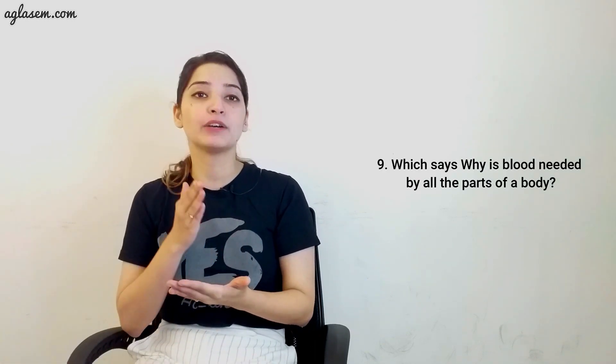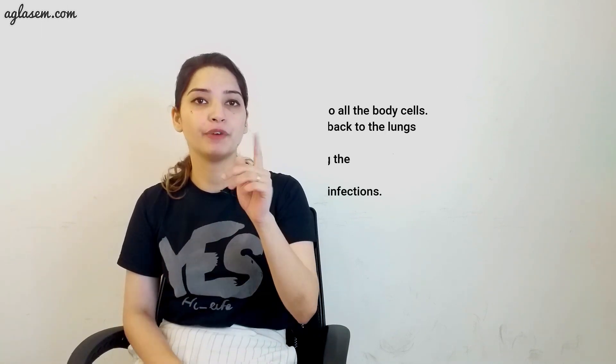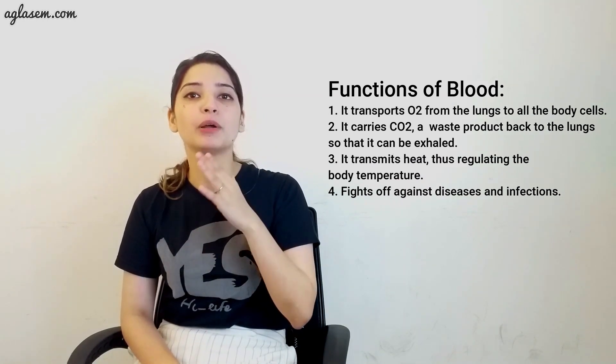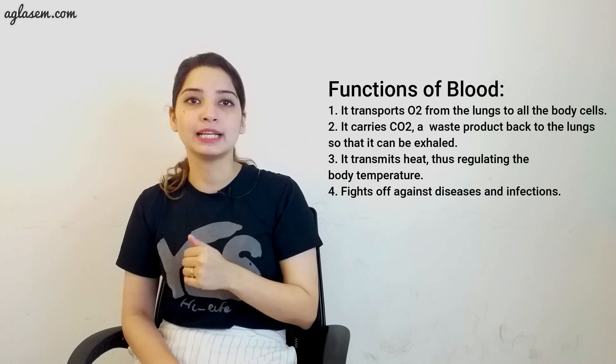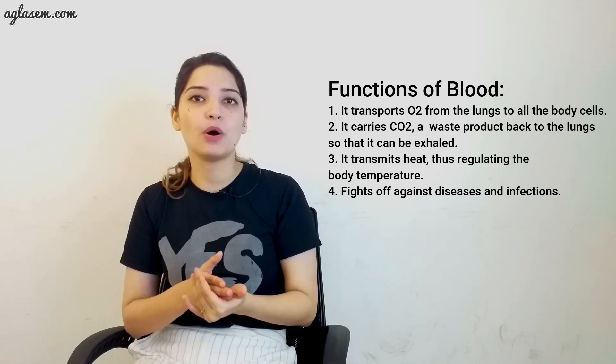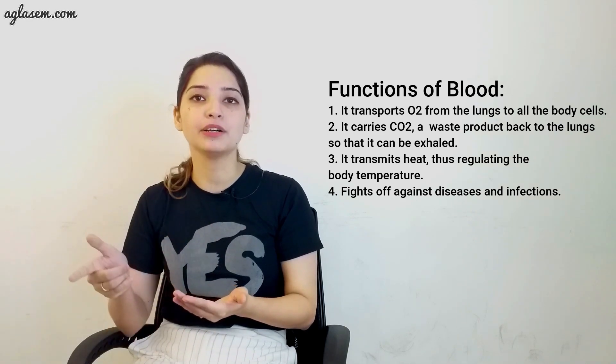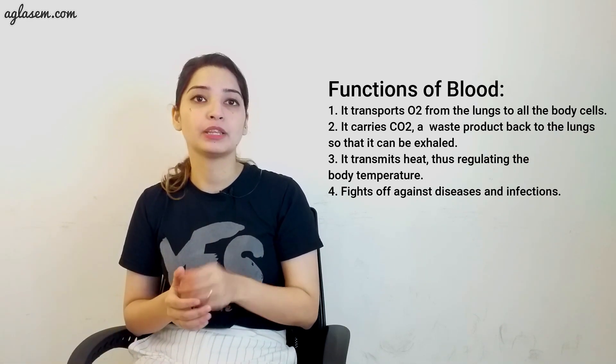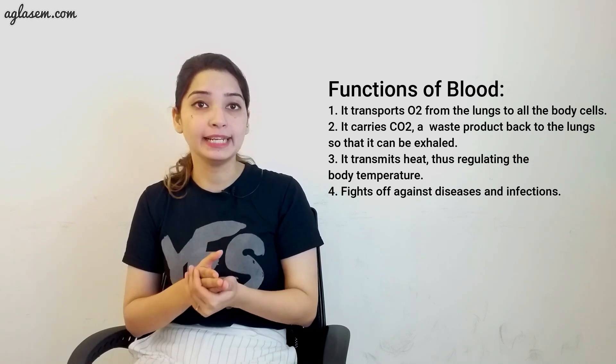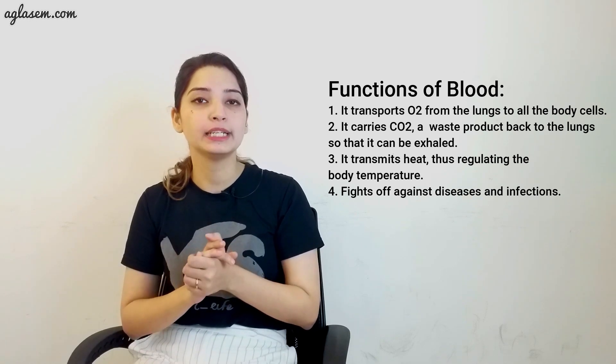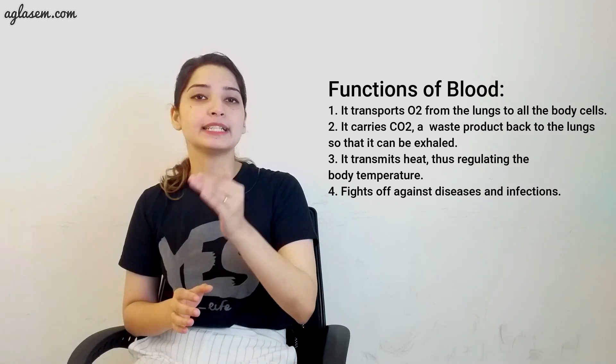Question 9 asks, why is blood needed by all the parts of the body? Blood is needed because it is an important element of the transport system. It transports oxygen from the lungs to all the parts of the body cells. It carries carbon dioxide, a waste product, back to the lungs so that it can be exhaled. It transmits heat, thus regulating the body temperature. And fourthly, it fights off against disease and infections.